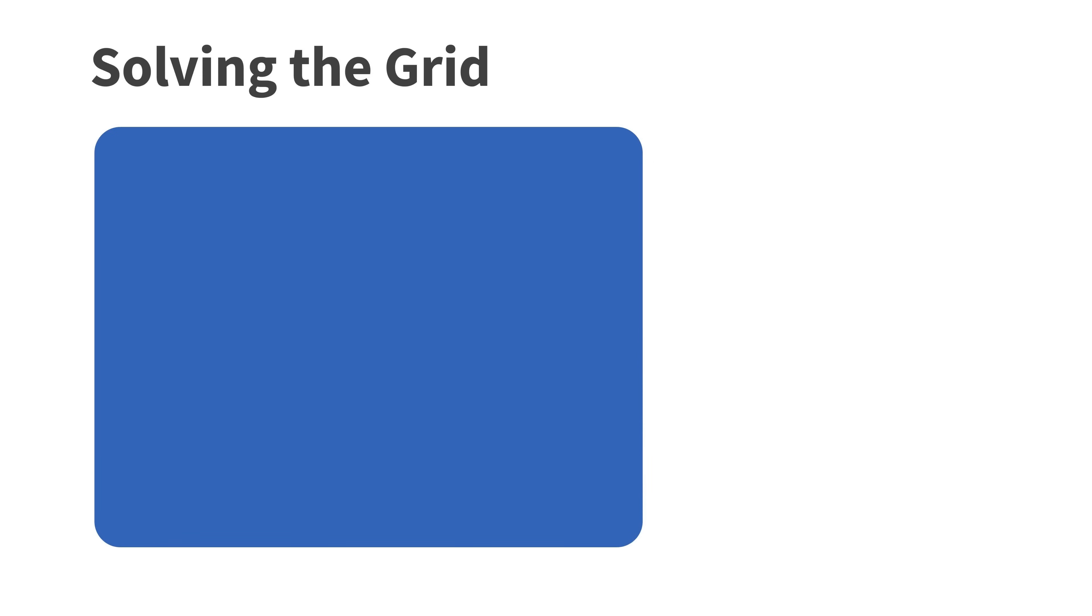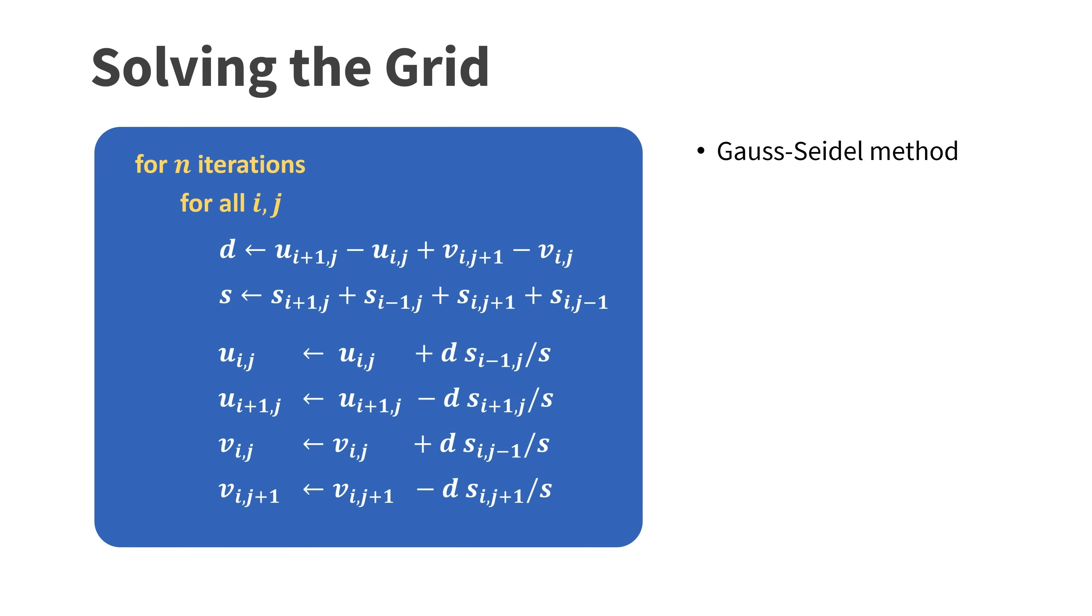Of course we don't want to simulate one single cell. We want to simulate the entire grid. To do this we iterate n times. In each iteration we run through all the grid cells. For each cell we perform the projection as discussed before. This method is called Gauss-Seidel. It is probably the simplest method to solve systems of equations.